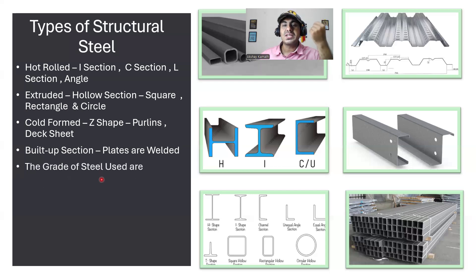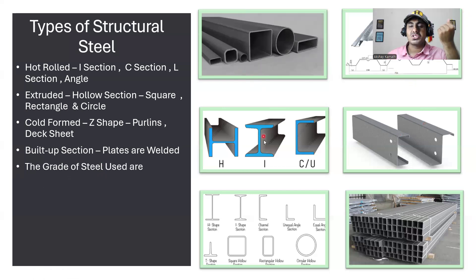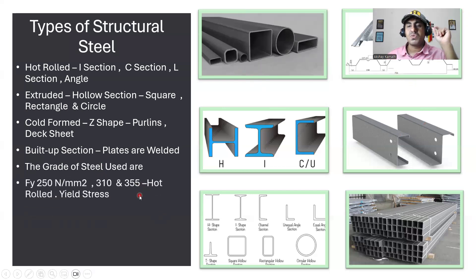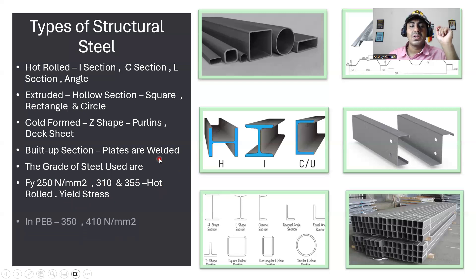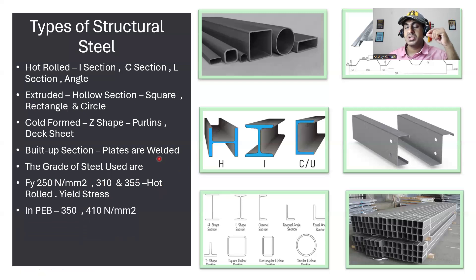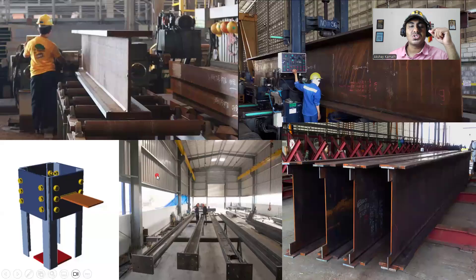Now, what are the grades of steel that we are going to use to make all these types of sections? Basically, FY 250 is one grade we have, then we have 310 grade, and 355 grade is also available. These are the hot roll section grades. 250 is your mild steel. 250, 310, and 355 are all yield stresses of that particular material. Especially when you are constructing a pre-engineered building (PEB) structure, the grade of steel will be 350 and 410 N/mm². These are the two grades used in PEB structures.